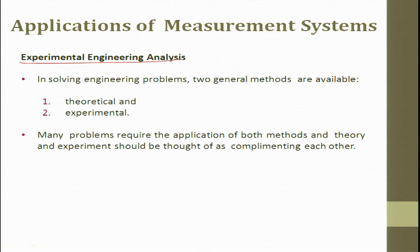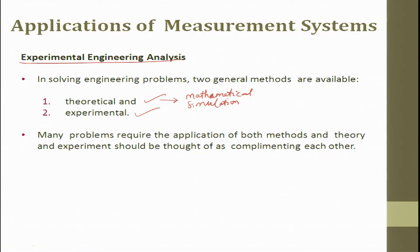Experimental engineering analysis: in solving engineering problems, two general methods are available - theoretical and experimental. Many problems require the application of both methods, and theory and experiment should be thought of as complementary to each other. In engineering analysis we do theory - we mathematically solve the problem or do simulation and understand the process completely. After understanding the process, whatever we have understood we execute in the experiment and see whether it is coming out as expected. This is the experimental engineering analysis where the application of measuring systems comes in a big way.